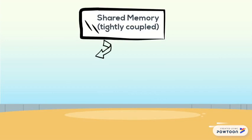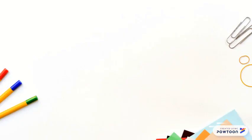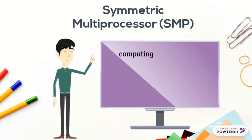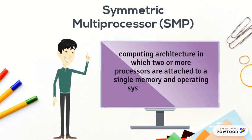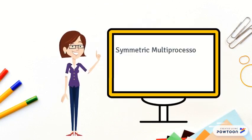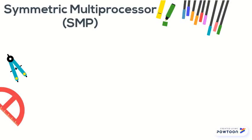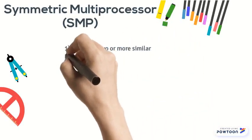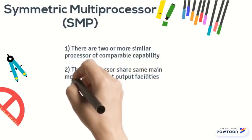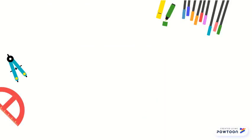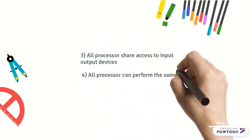Shared memory is a tightly coupled system divided by two: first, non-uniform memory access NUMA; and second, symmetric multiprocessor SMP. Symmetric multiprocessor SMP is a computing architecture in which two or more processors are attached to a single memory and operating system OS instance. SMP has four characteristics: first, there are two or more similar processors of comparable capability; second, these processors share the same memory and input-output facilities interconnected by a bus; third, all processors share access to input-output devices; fourth, all processors can perform the same function.